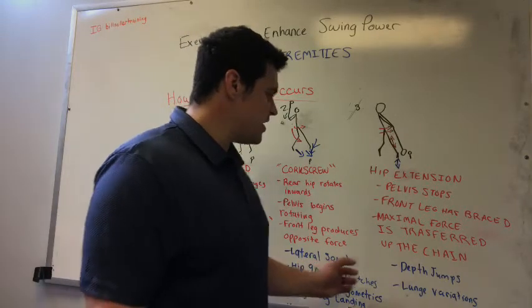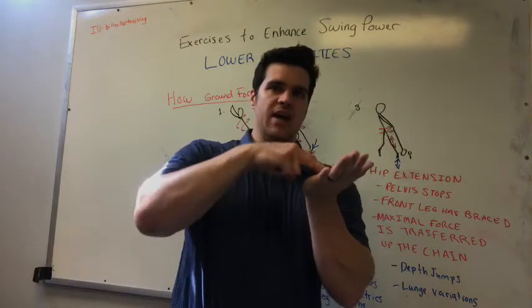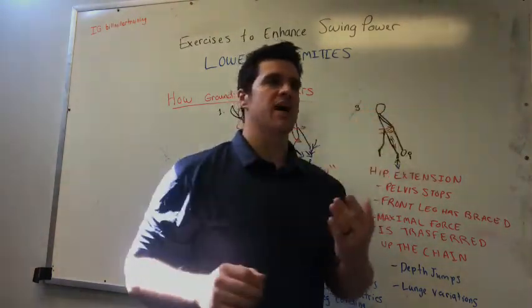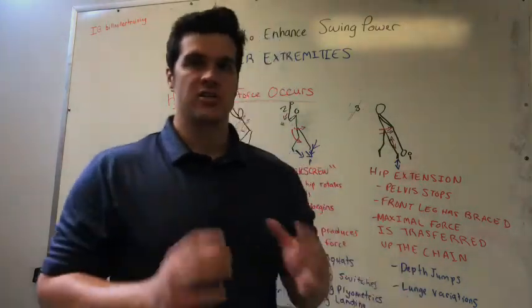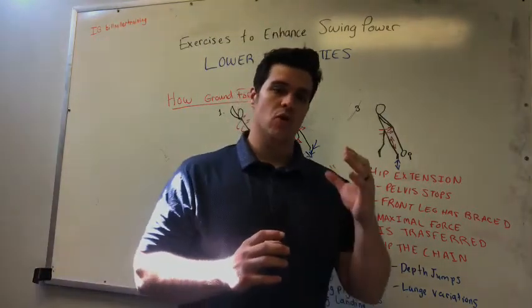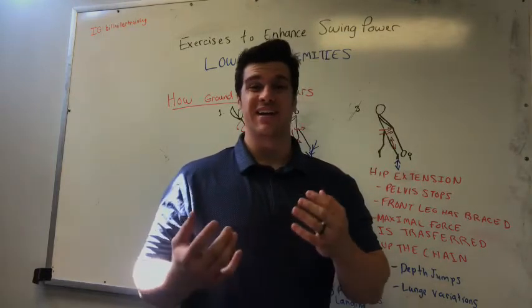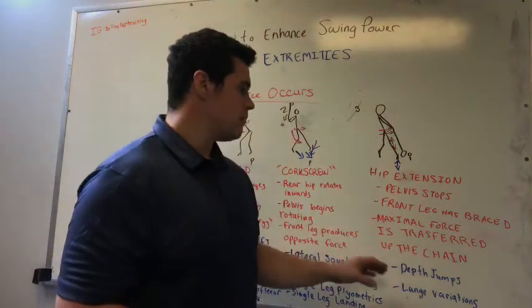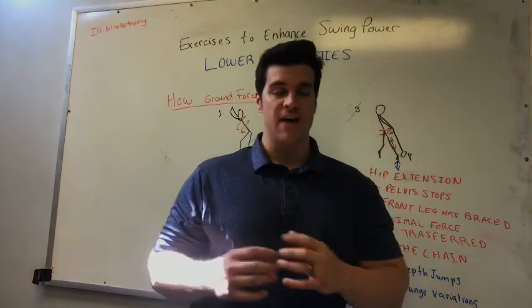Rapid plyometrics where the athlete has to react, hit the ground, and jump as high or as far as possible are highly effective. Unilateral bounding exercises and depth jumps are great, and I like to test depth jump RSI to track improvement. However, if the athlete is more force-deficient — relatively weak in the lower extremities with limited training background — you'll probably need to prioritize heavy lunge variations and split squats to get the most out of that front leg brace.